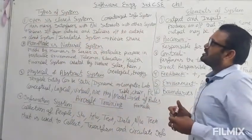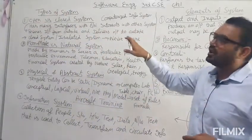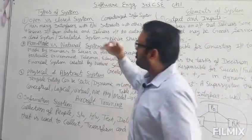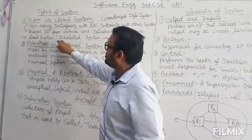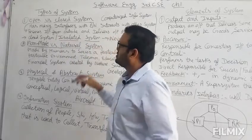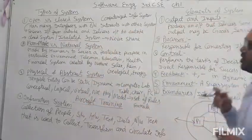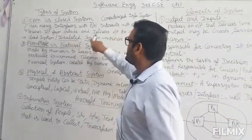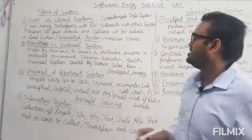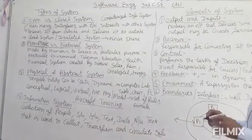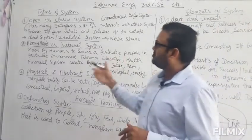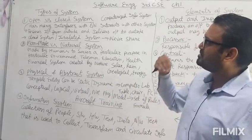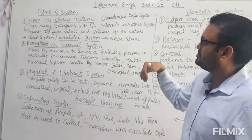Now, the closed system — also called an isolated system — it never shares input from the outside and never sends output to the outside of the system.